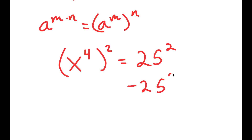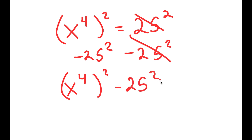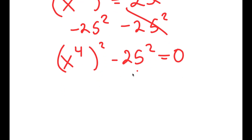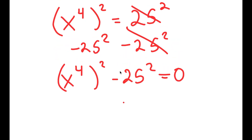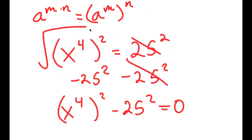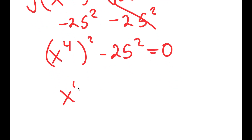Now I'm going to subtract 25 squared on both sides. These two cancel out, and I get x to the power of 4 to the power of 2 minus 25 to the power of 2 is equal to 0. And before we actually do this, I'm going to take the square root on both sides so I can cancel these twos out. So I get x to the power of 4 minus 25 is equal to 0.